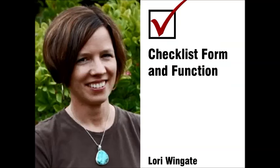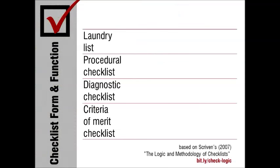Before we get into specific evaluation checklists, I want to spend a few moments to provide a foundation for understanding the form and function of checklists — the main types and their purposes. So there are four main types of checklists, and these categories are based on the work of Michael Scriven, particularly his paper, The Logic and Methodology of Checklists, which you can download from our website. It's also on the handout that Emma mentioned.